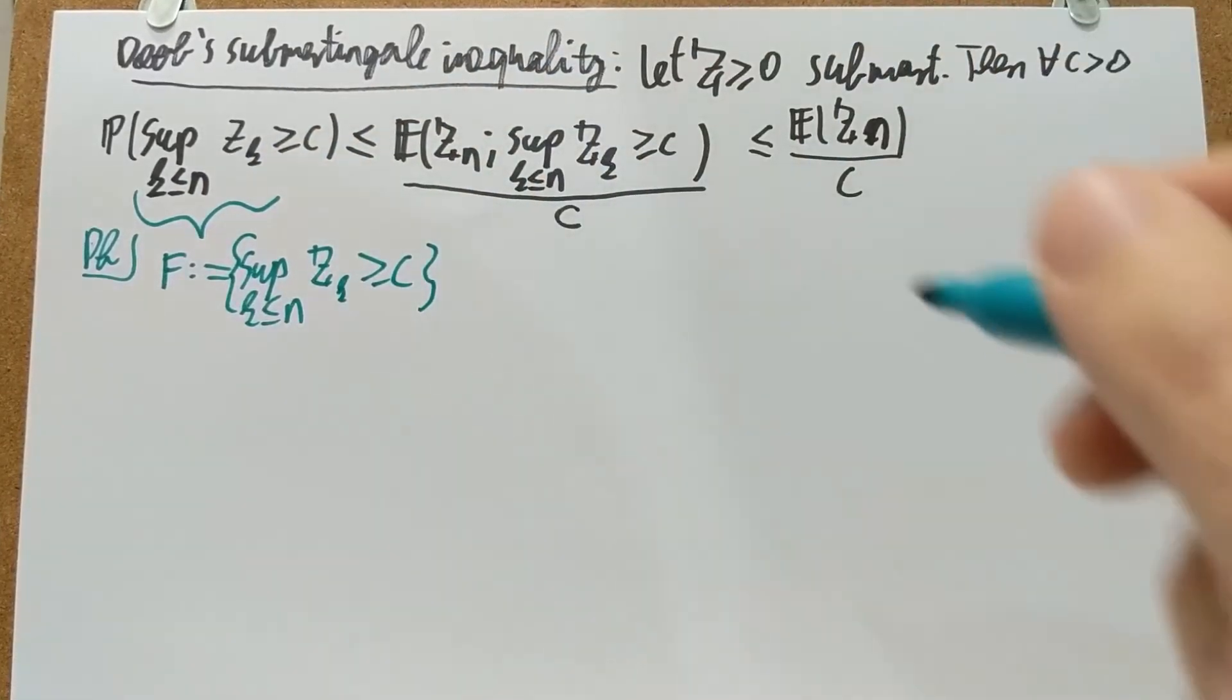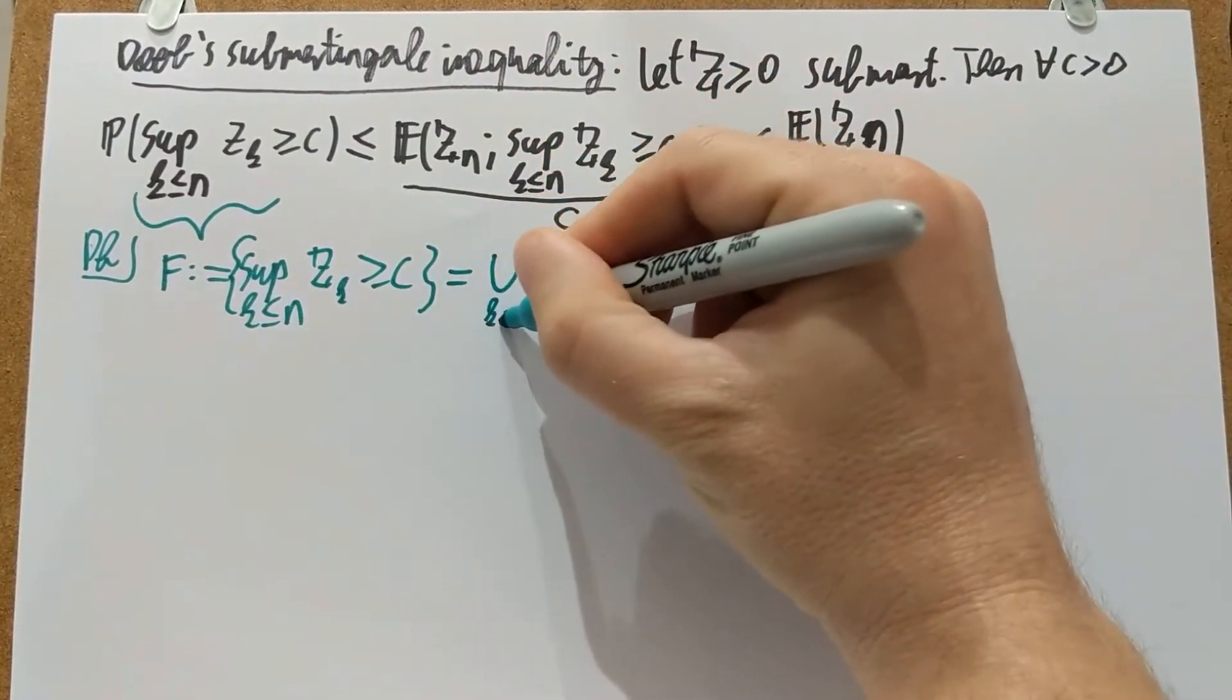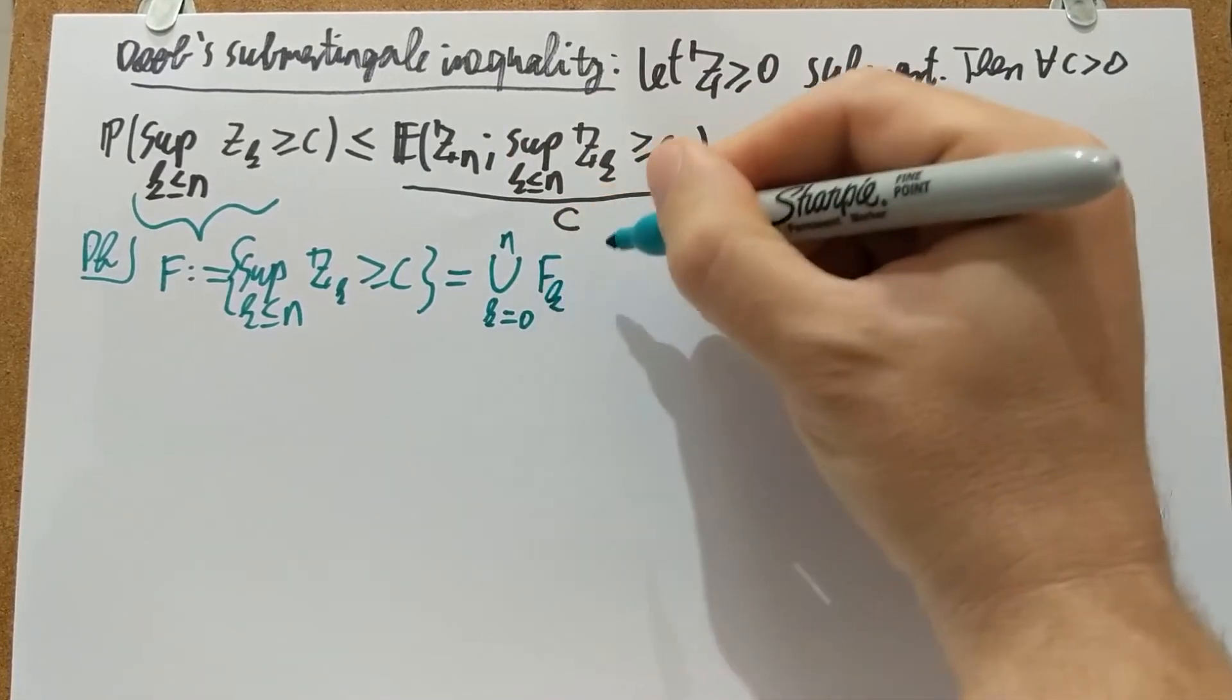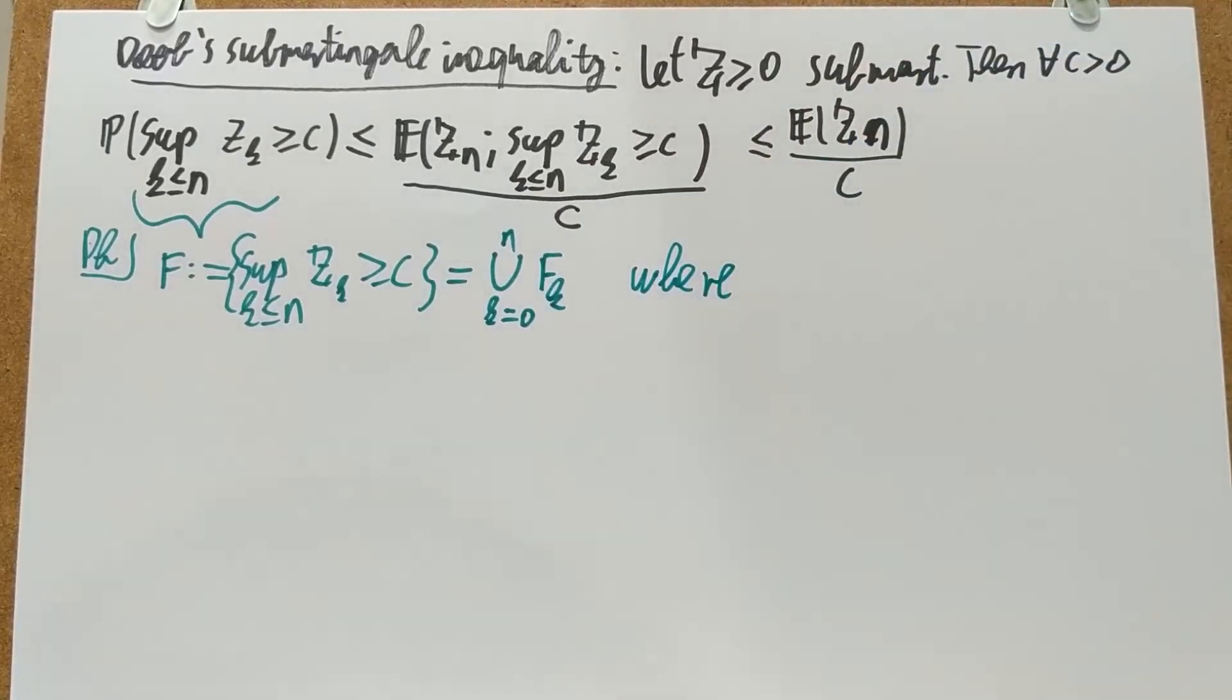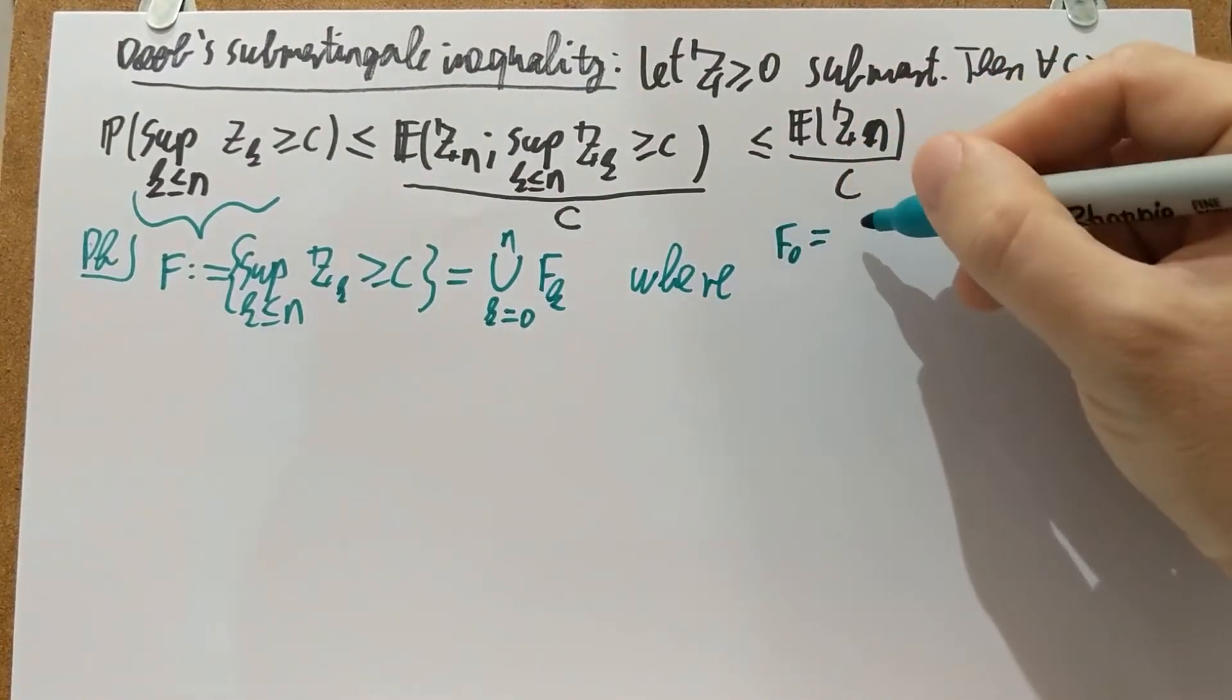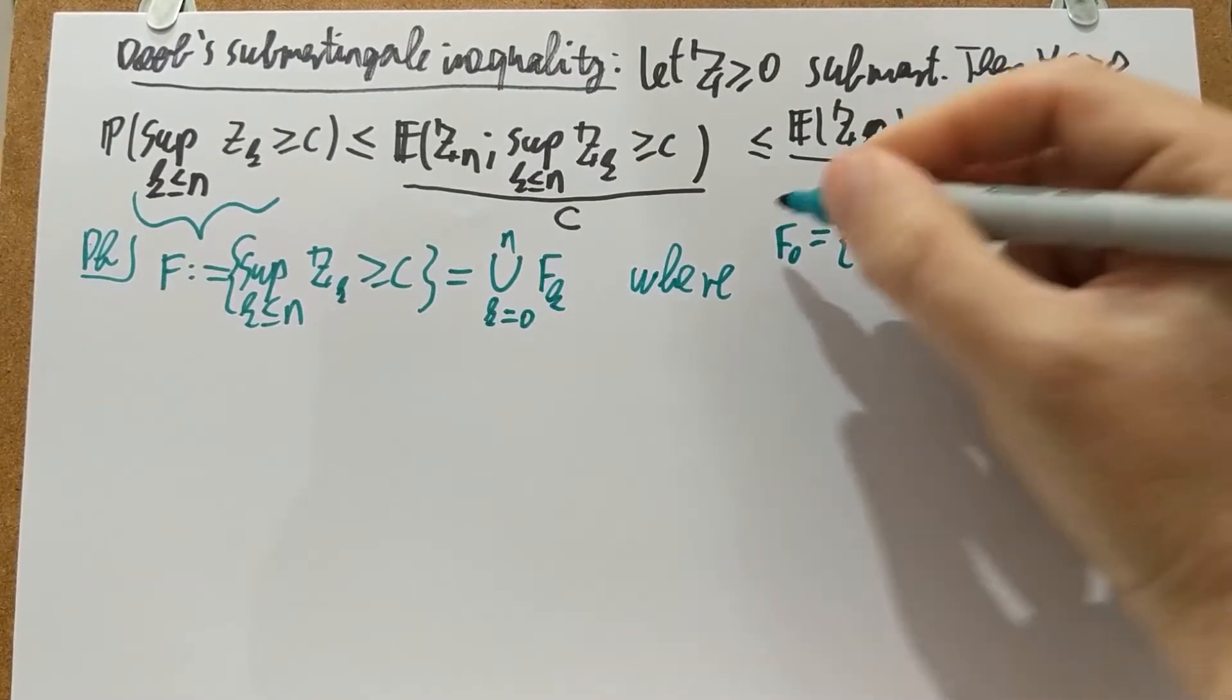And I'm going to break this up according to the first instance that I'm going above C. So I'm going to break it up into a union where the F's are defined as follows.